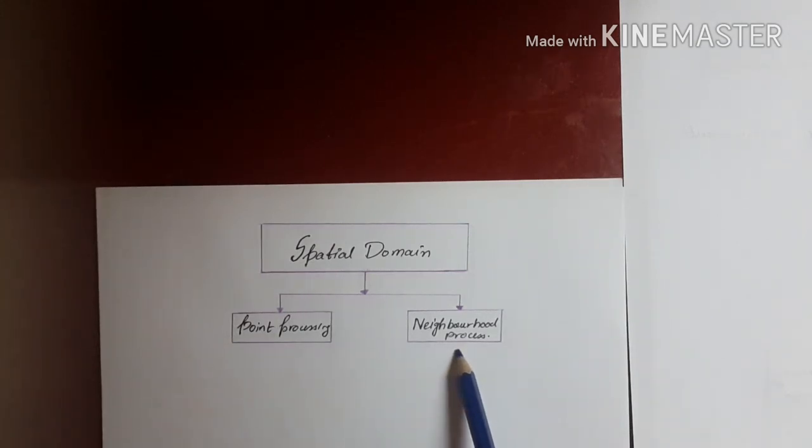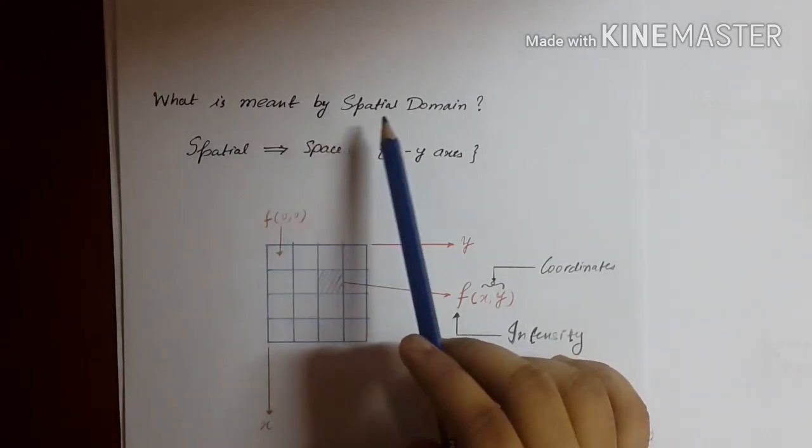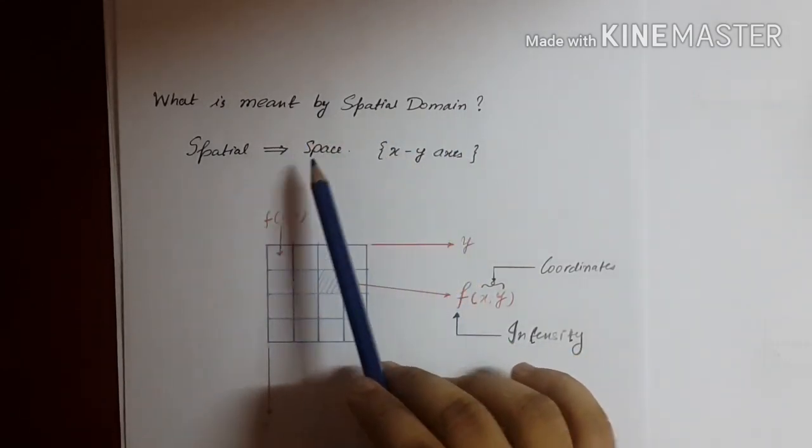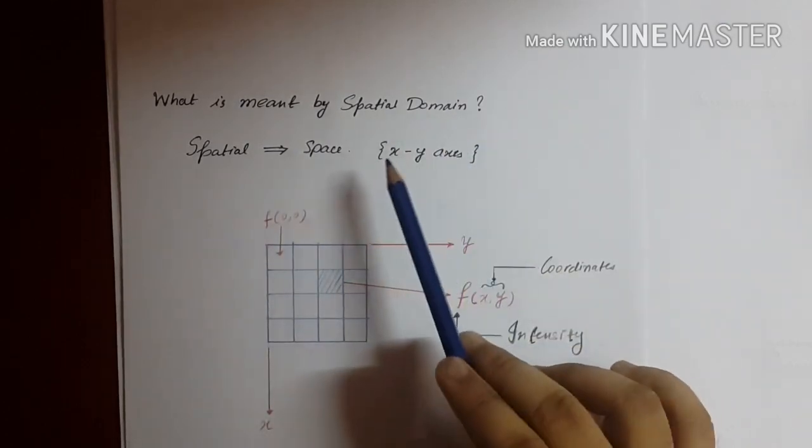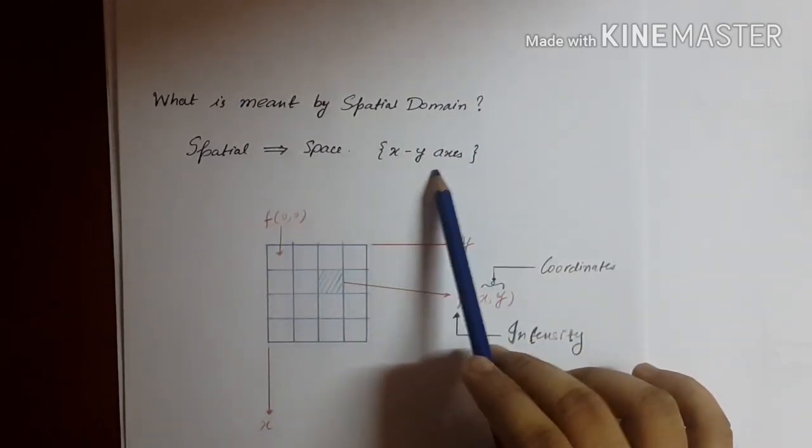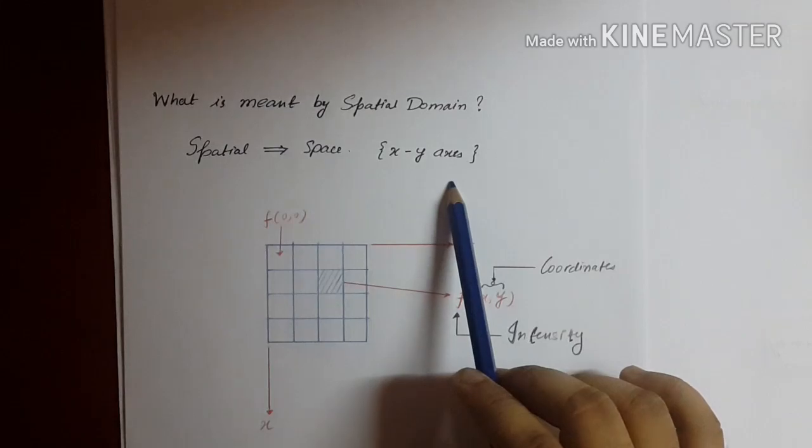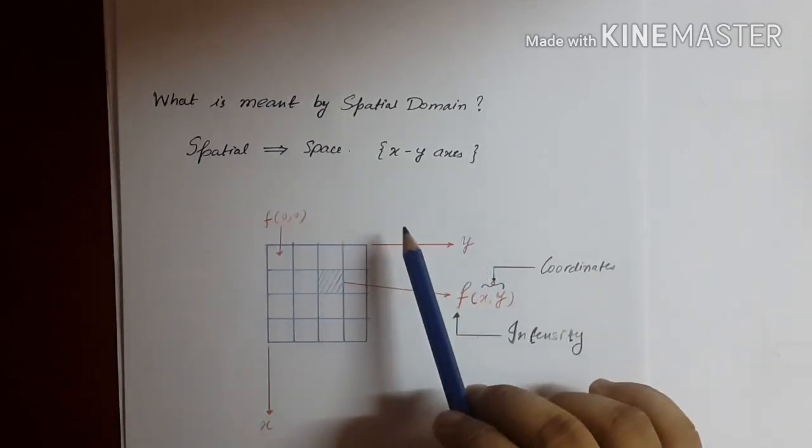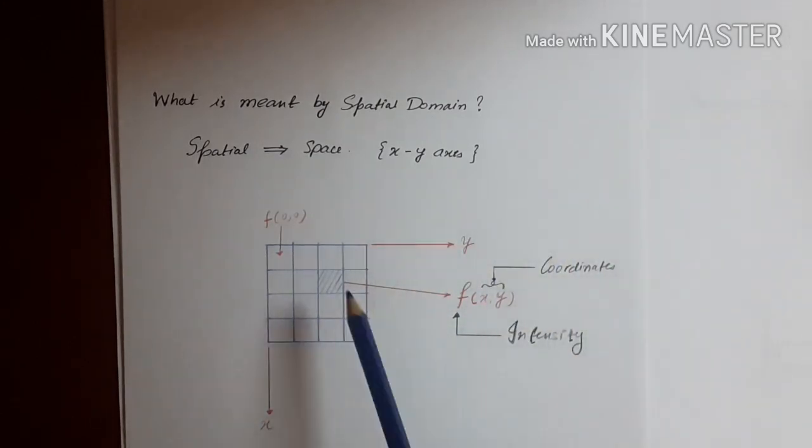What is meant by spatial domain? The word spatial relates to space, that is, x and y axis, as we generally consider while looking at graphs or signals that we construct using the Cartesian x and y axis. The axis that we use in image processing for spatial domain representation are as I have drawn here.